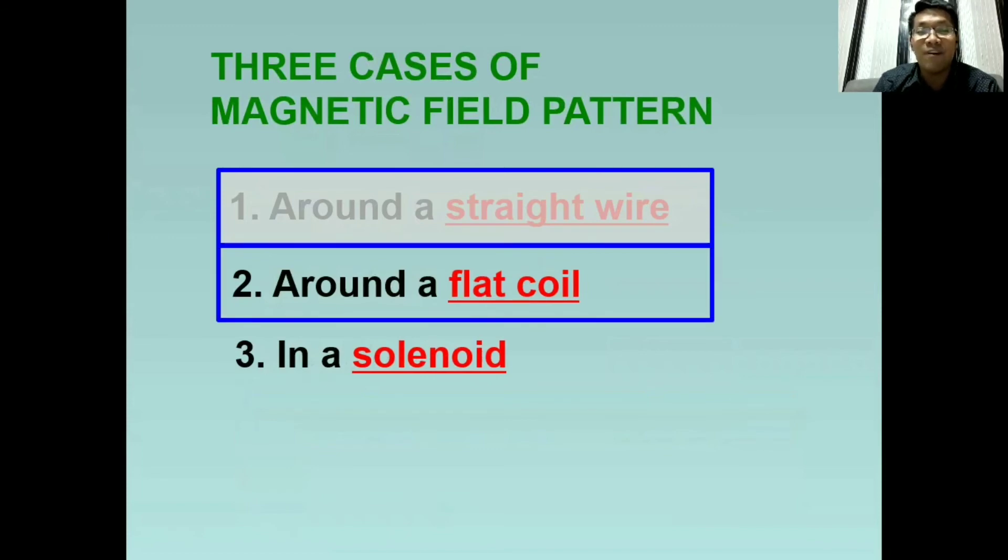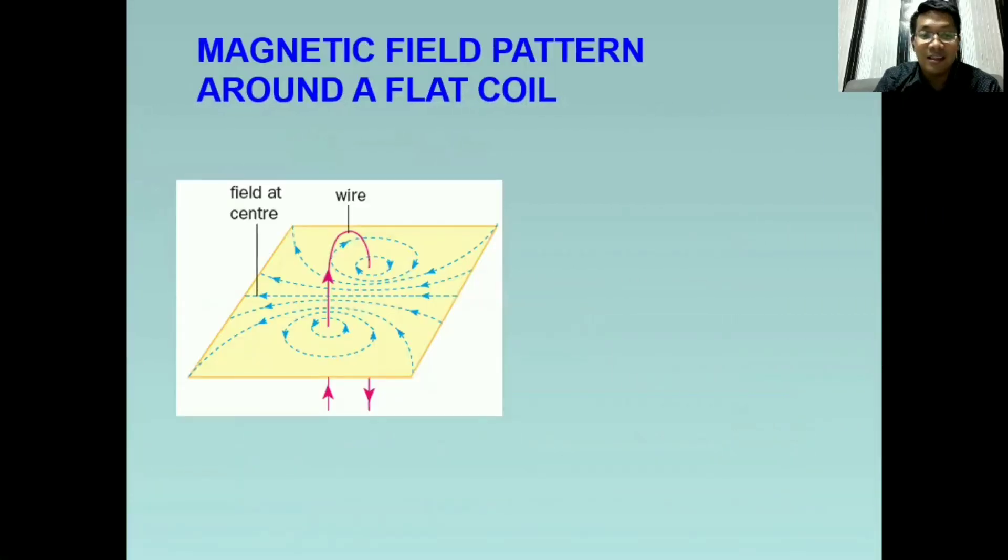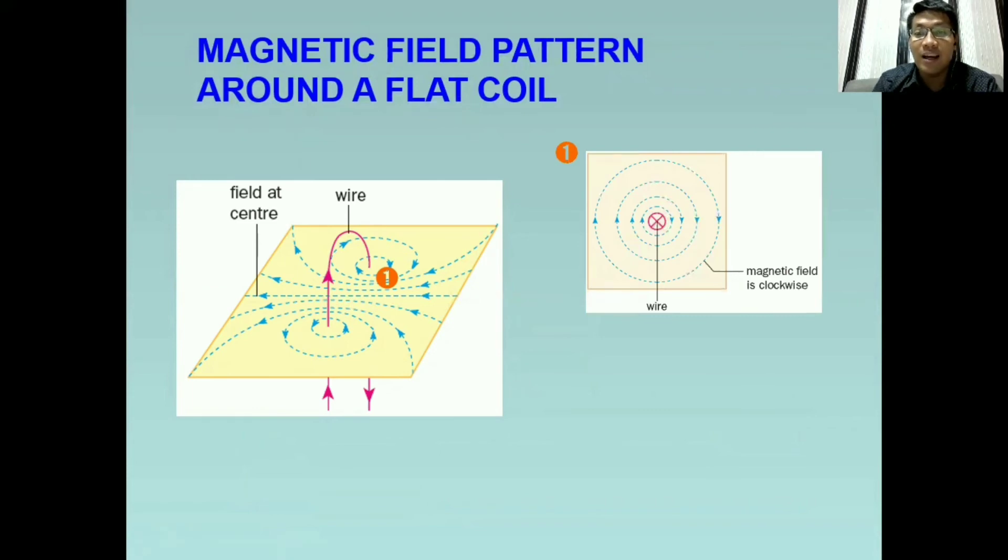So we are done with the magnetic field pattern around a straight wire. This time, let's have around a flat coil. Flat coil appears like this. So meron tayong wire dito sa kaliwa at meron din sa kanan. So it is described as coiled wire. Let's focus first on this side. So let's label it as one. In number one, the current is based on the symbol, the current is moving inward or away from you. So ituturo ninyo yung thumb ninyo palayo sa inyo. Therefore, the magnetic field is clockwise.